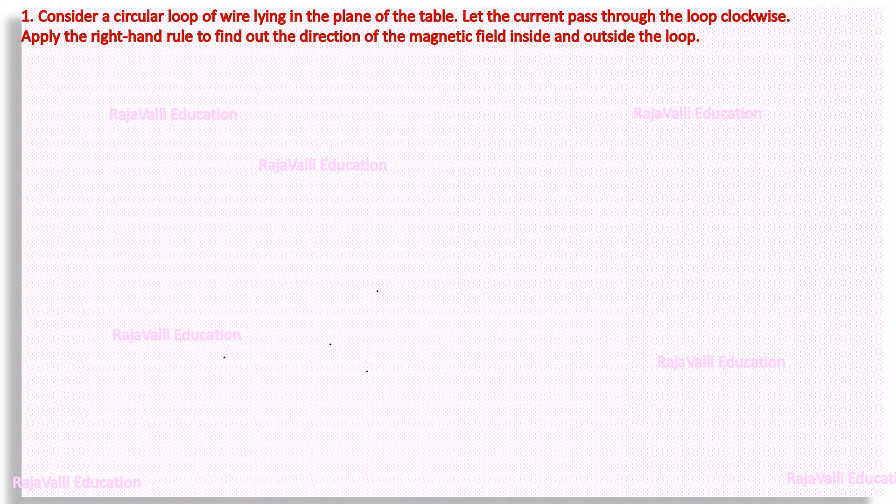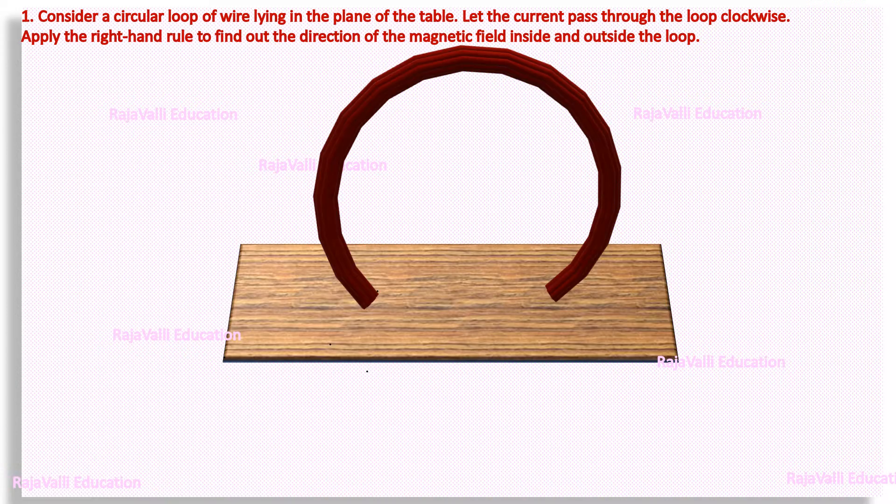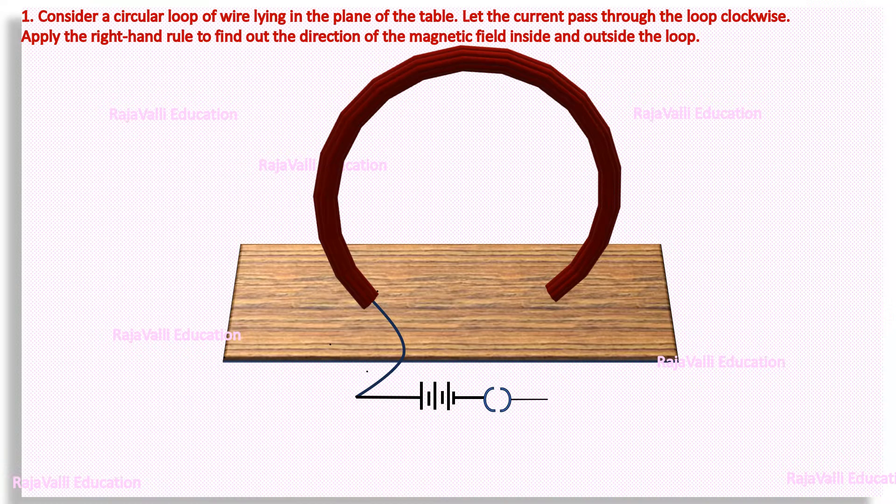A circular loop of wire lying in the plane of the table. The left side of the coil is connected to the battery since the current should pass through the loop clockwise direction as per the question. The negative terminal is connected to the key and it is continued to the right side of the circular coil.